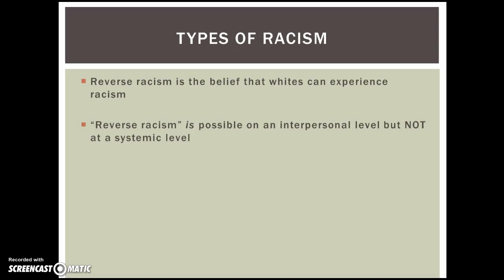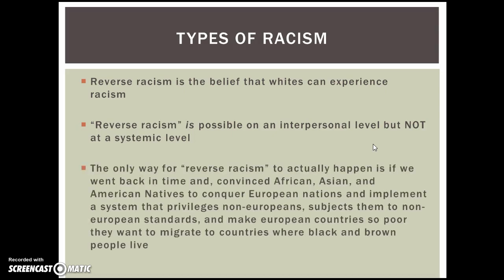When it comes to types of racism, one type that many people believe exists is reverse racism — that when a white person is discriminated against because of their skin color, or that whites are attacked in some form in our culture. However, what whites are experiencing is interpersonal racism. True reverse racism is only possible at the interpersonal level, but not at a systemic level. In order for true reverse racism to actually happen, we would have to go back in time, convince African, Asian, and Native American nations to conquer European nations and implement a system that privileges non-Europeans, subject Europeans to non-European standards, and make European countries so poor that they would want to migrate to where black and brown people live. That's what true reverse racism would look like — but that's not possible, unless we have a time machine.